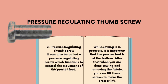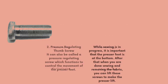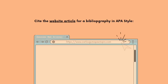Second, the pressure-regulating top screw, also called the pressure-regulating screw, functions to control the movement of the presser foot. While sewing is in progress, it is important that the presser foot is at the bottom. When you are done sewing and removing the fabric, you can lift those screws to make the presser lift.